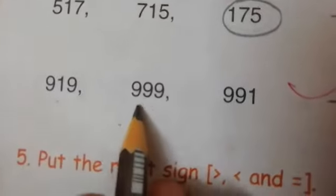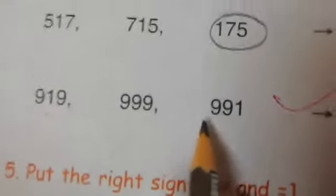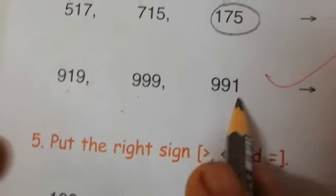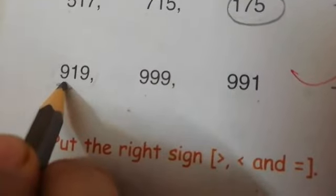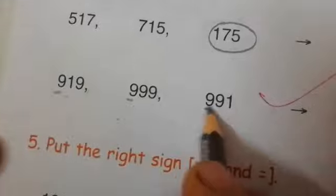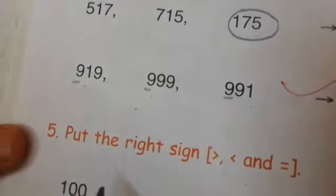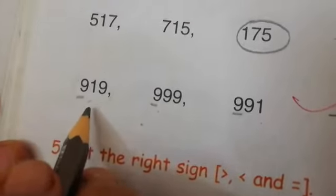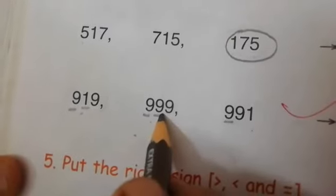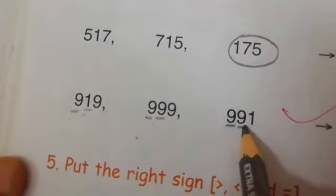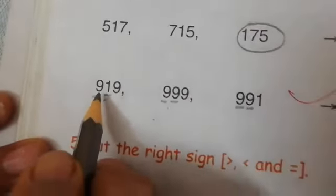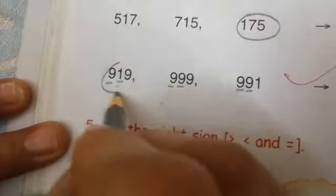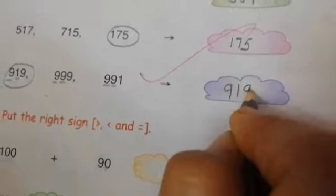919, 999 and 991. Now what we have to check? Hundreds: 900, 900 and 900 — all are the same. Now we have to check tens. 1 ten, 9 tens and 9 tens. Which tens is smallest? 1. We will ring this number and we will write here 919.